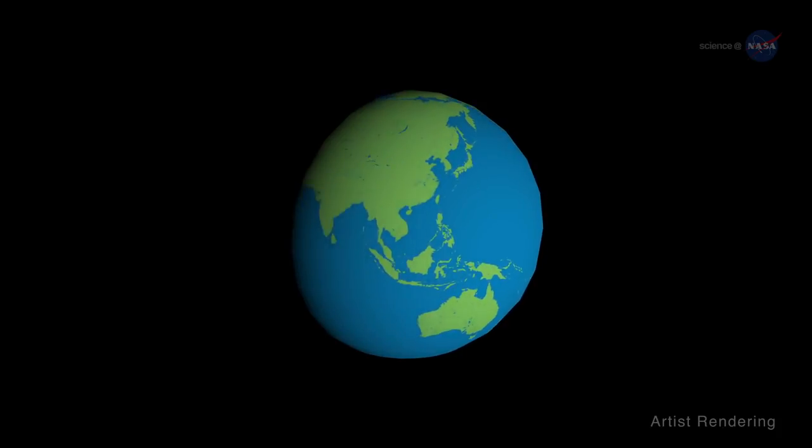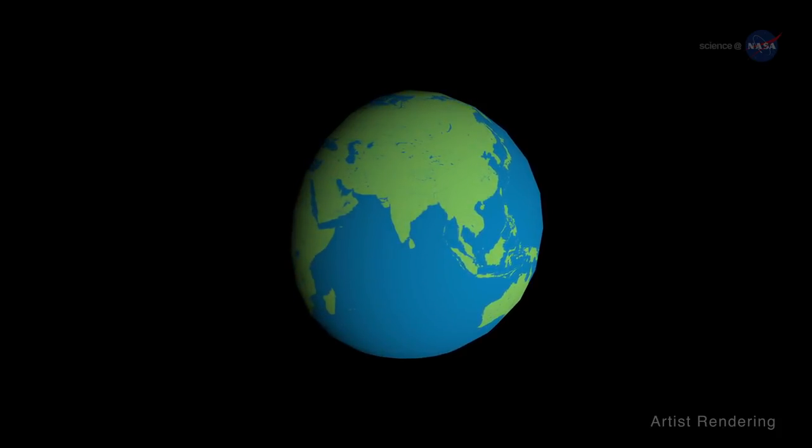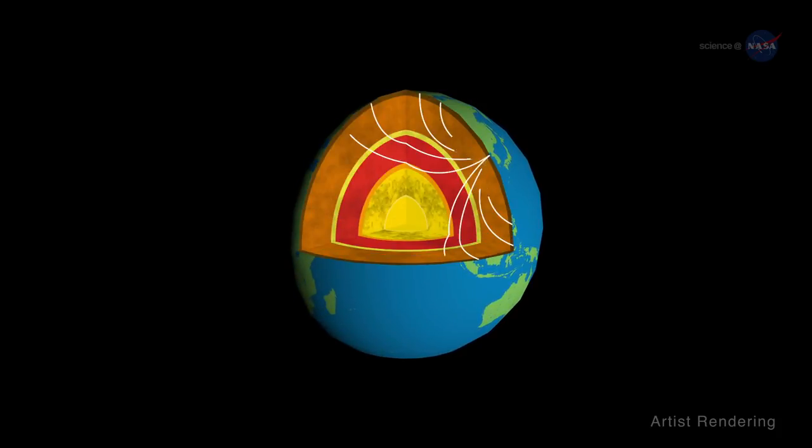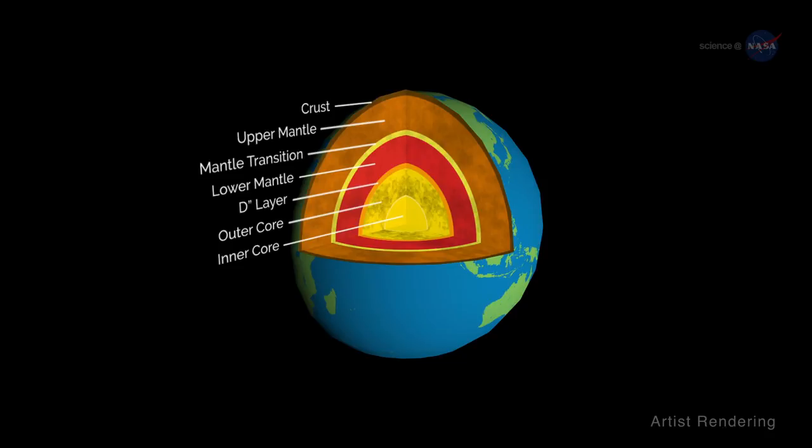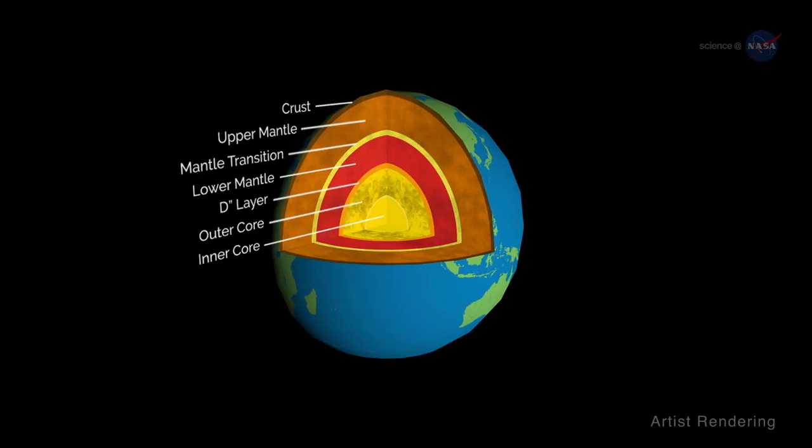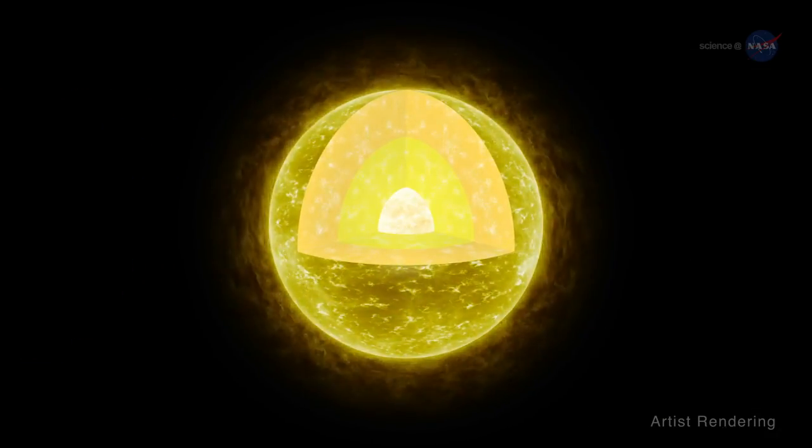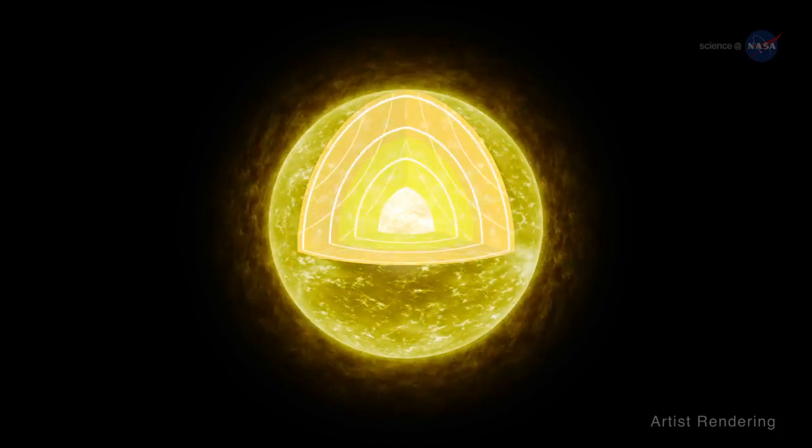Astro-seismology is akin to the science of seismology. Earthquakes send waves rippling through the body of Earth. By analyzing those waves, seismologists can figure out the interior structure of our planet. There are also waves rippling through the interior of stars—acoustic waves.